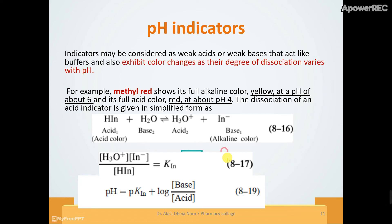What is a pH indicator? An indicator can change color from its acid form to its base form. This color change occurs as a function of its degree of dissociation — dissociation from the acid form to the basic form. For example, in acid form the indicator may be red, and upon dissociation to the basic (alkaline) form it becomes yellow. Every indicator has different colors and changes at a different pH range.